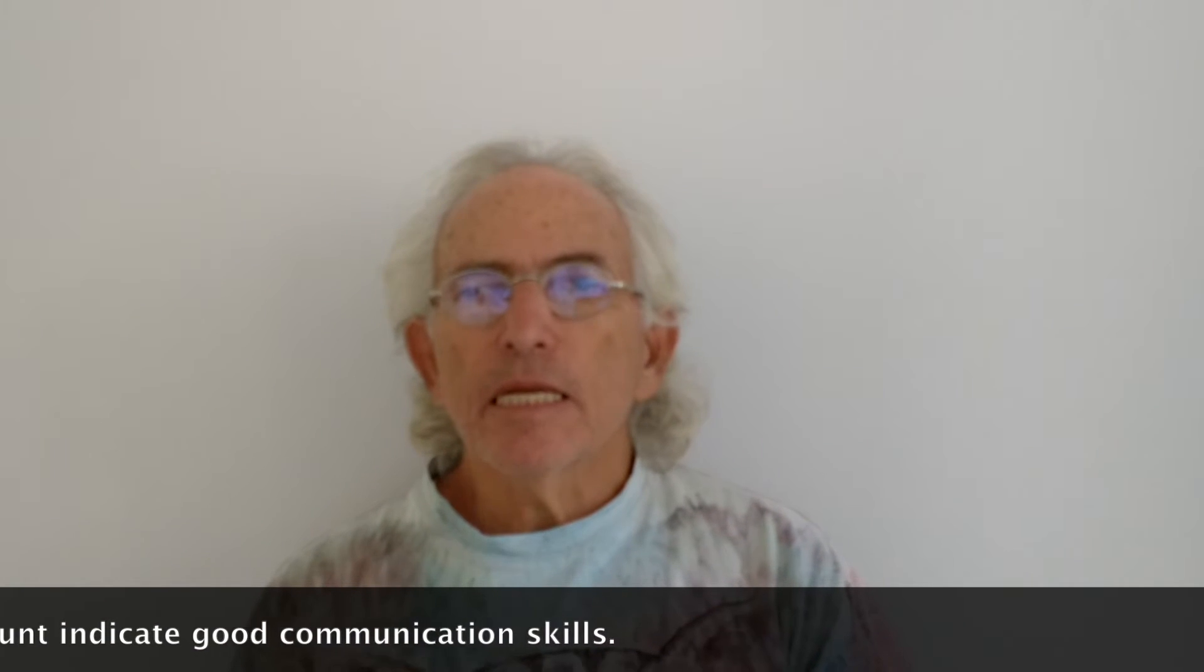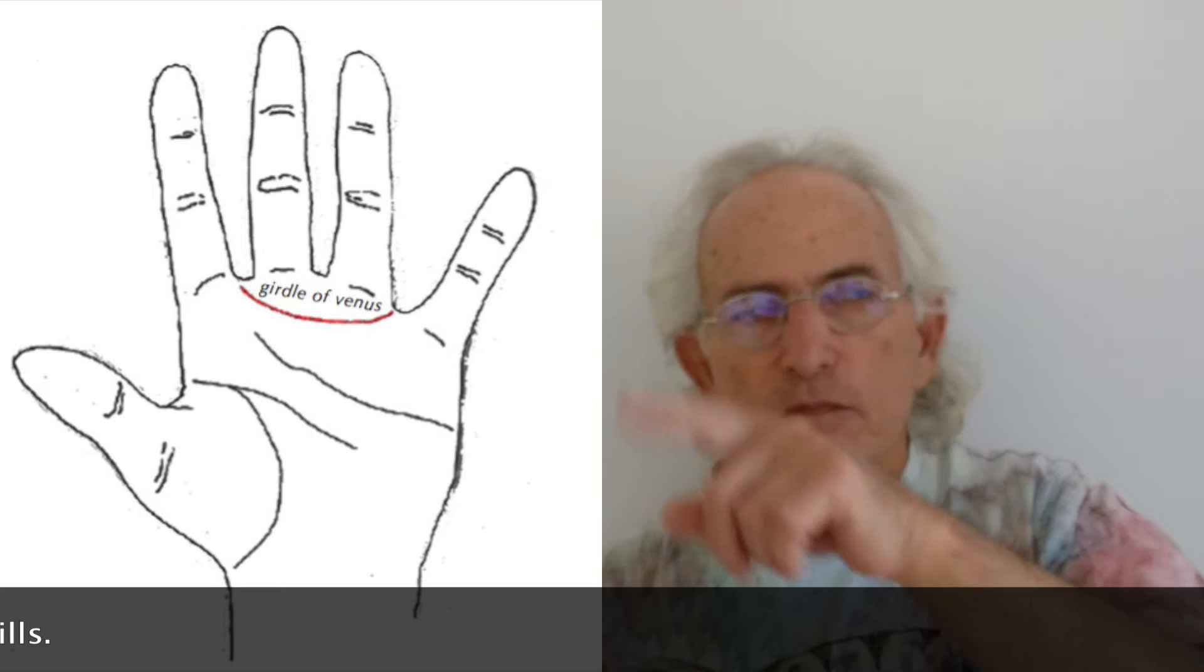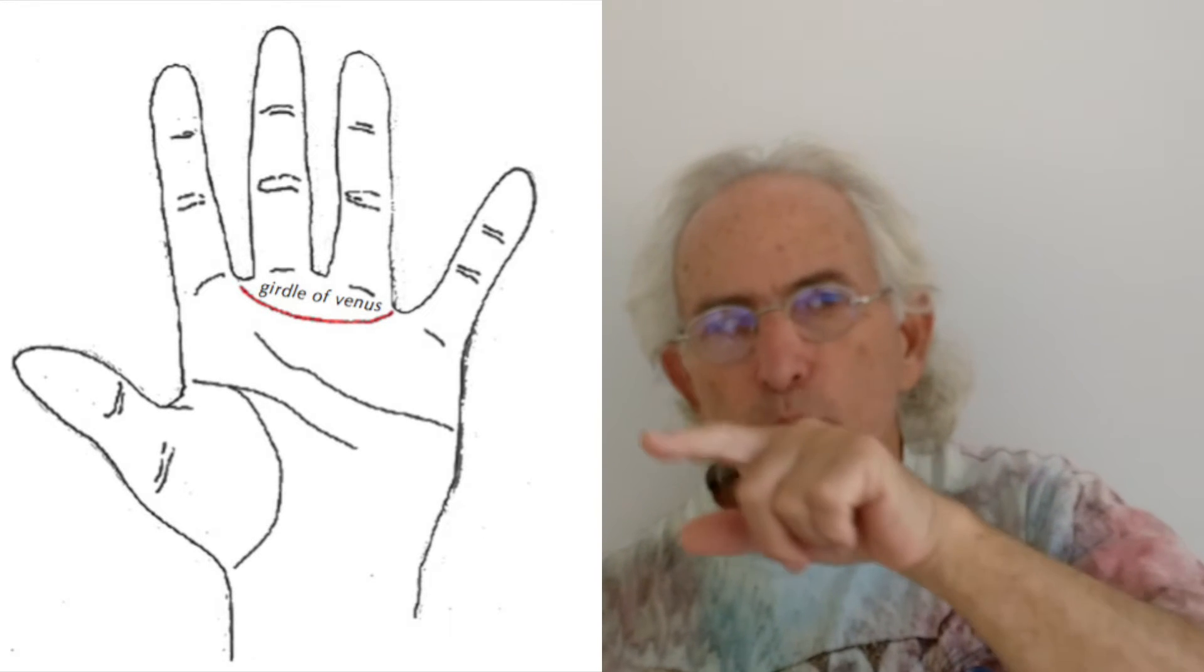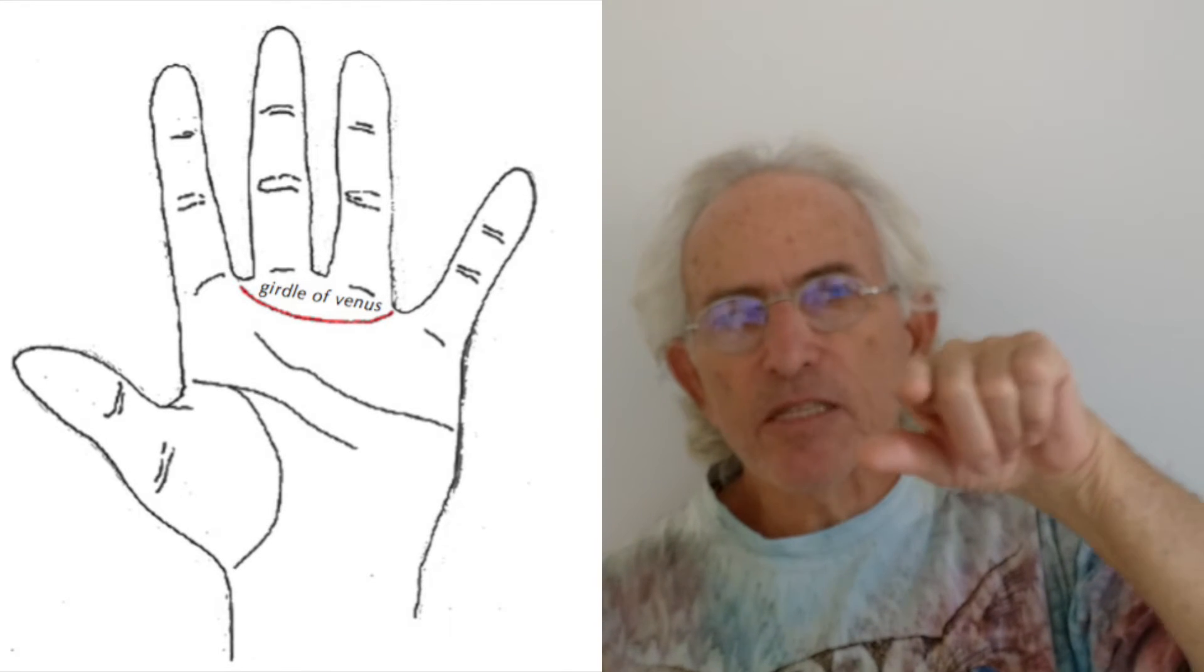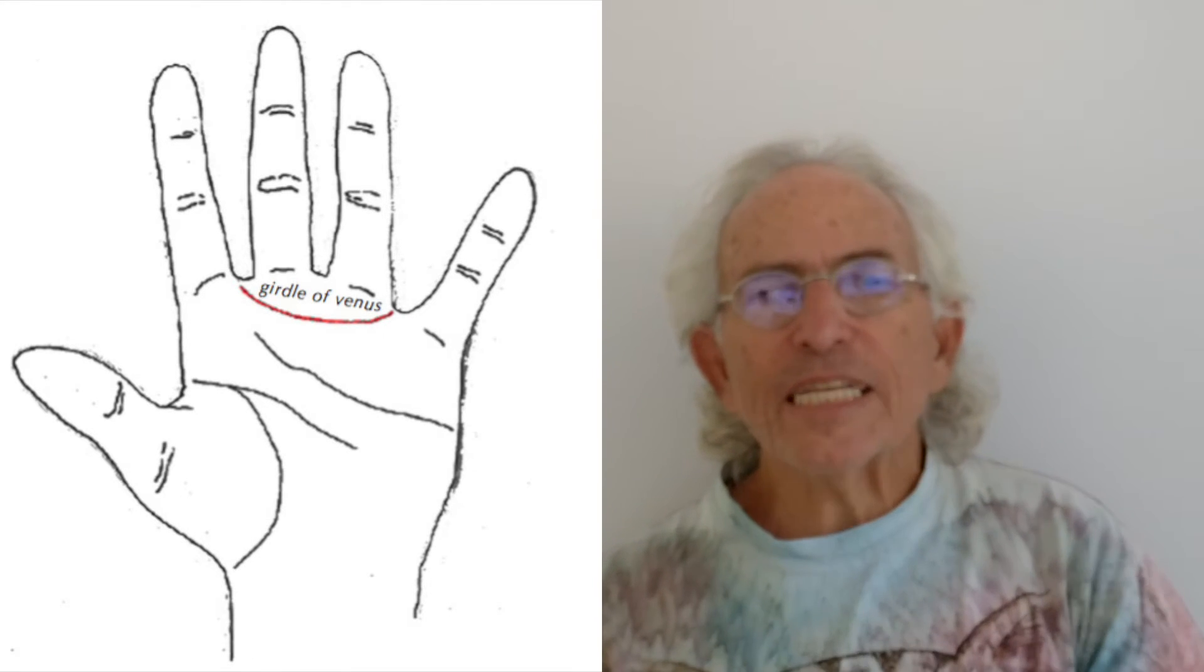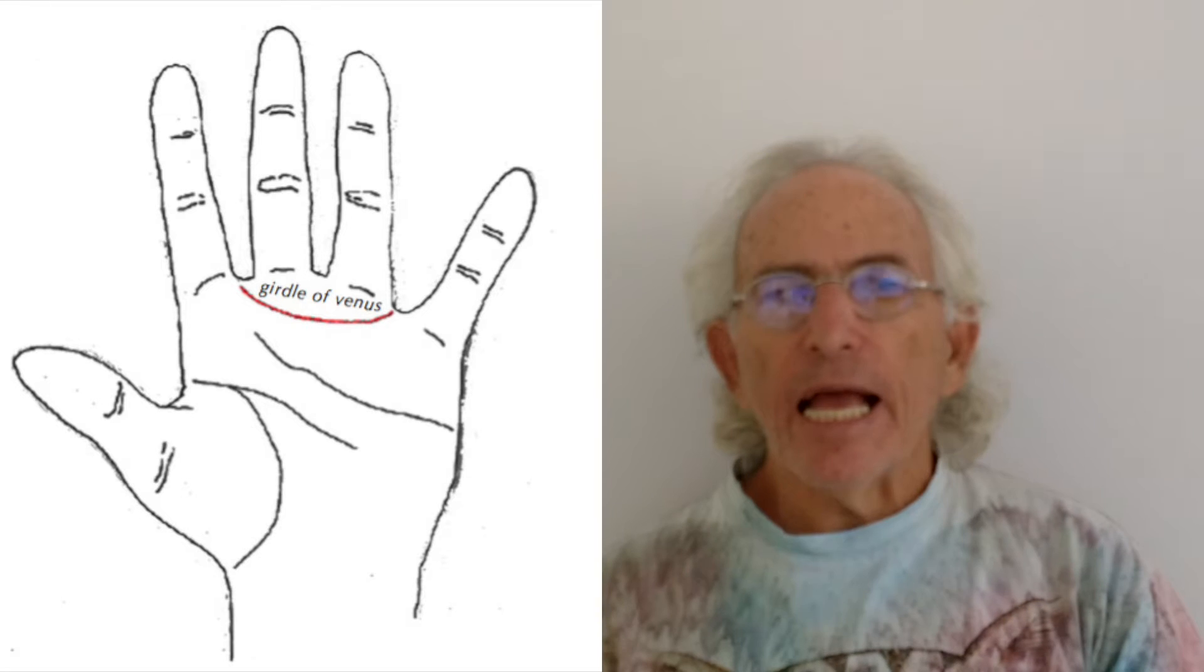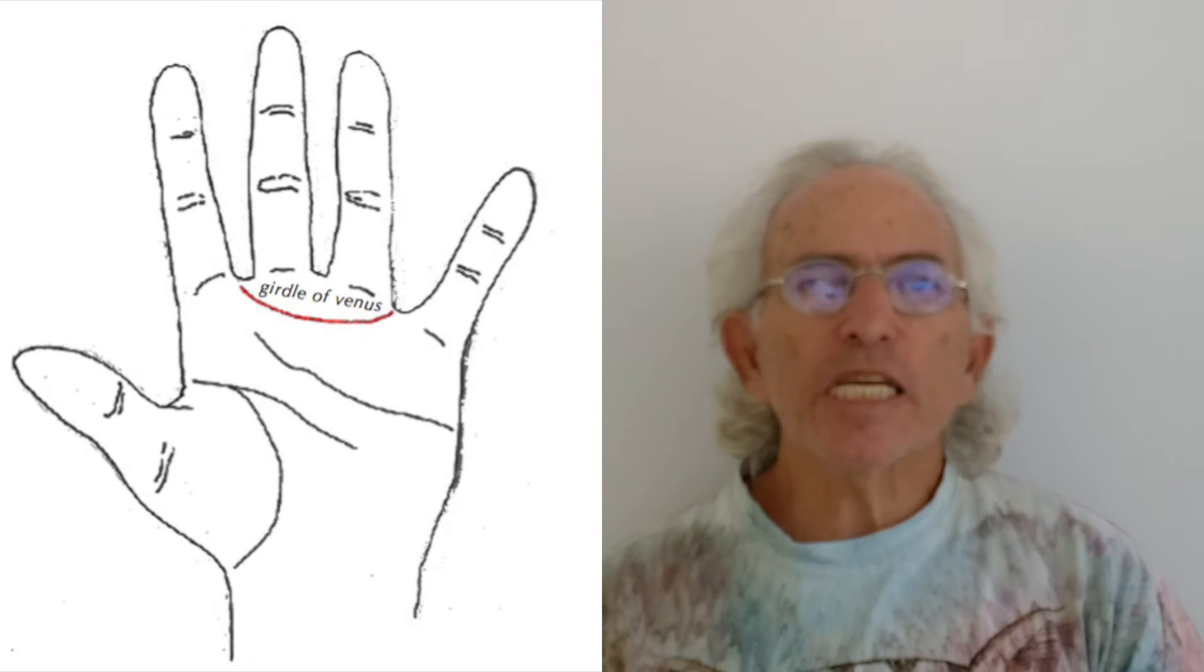Now what do I want to discuss? So the next secondary line we can discuss is the girdle of Venus. Now the girdle of Venus is, as you see in the diagram, is a semicircle that can start somewhere around Jupiter, in between Jupiter and Saturn, and then arc its way somewhere around the Sun. And that's called the girdle of Venus. And the girdle of Venus is actually a secondary heart line. And when it comes into play, it's usually when there's a deficiency in the heart line.